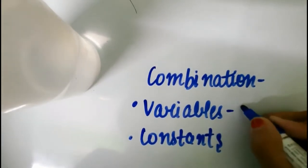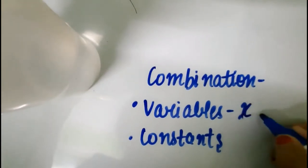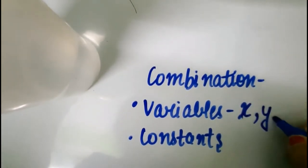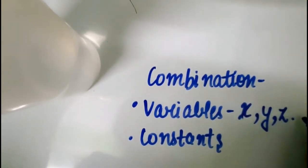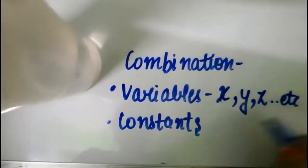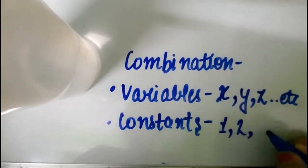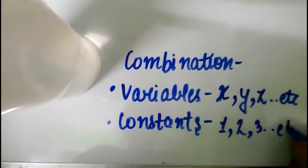Variables are, for example, x, y, z, etc., and so on. These are all the alphabets. Variables are also known as literals. Now constants, these are all the numerical values. Numerical values, for example, 1, 2, 3, 4, 5, etc., and so on.